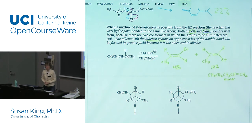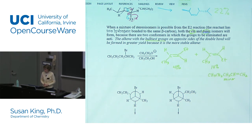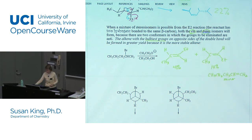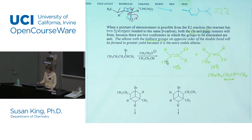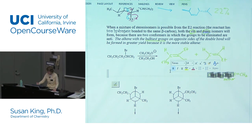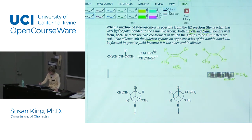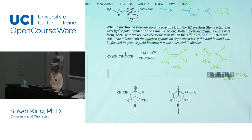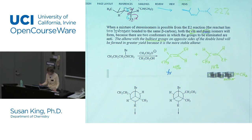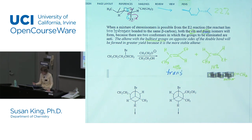Okay, all right, so here's where we left off last time. When we were talking about the mixture of products from this particular alkyl halide, we saw that we got 41% of the trans, so let's label that — 41% trans.